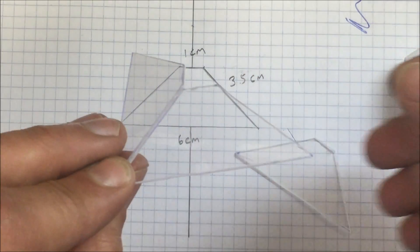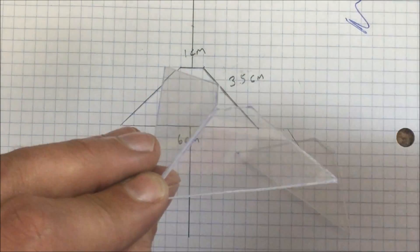So right there on the edges a couple drops of super glue, do the same thing to the other piece and let's take a look at what we've created.